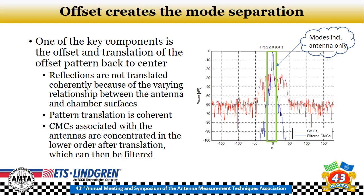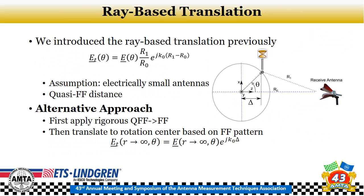This gives us the opportunity to apply a filter. At last year's AMTA, we introduced the ray-based translation from the offset position back to the center, using the phase difference between path lengths R1 and R0, as well as the 1-over-R relationship between the two different distances. This is essentially a geometric approach to move the offset position back to the center. In this formulation, we assume the antennas are electrically small and are at a quasi-far field distance — two assumptions that are very good for the type of antenna used for SVSWR measurements.